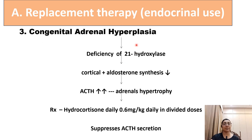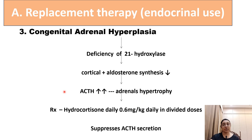Congenital adrenal hyperplasia involves a deficiency of the 21-hydroxylase enzyme, ultimately decreasing the synthesis of cortisol and aldosterone and increasing ACTH secretion, leading to adrenal hypertrophy. In treatment, hydrocortisone 0.6 milligram per kg daily in divided doses can be given to suppress ACTH secretion.